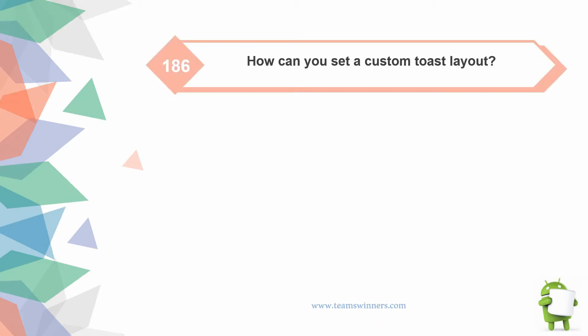How can you set a custom toast layout? Using the toast setView method.